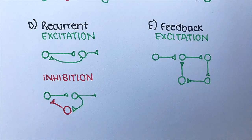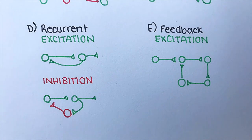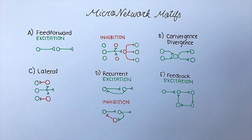Next you can see feedback and recurrent inhibition, where the excitation of one cell leads to the excitation of the one downstream, which in itself then inhibits the initial cell's functioning. This is quite useful to prevent a snowballing effect of excitation, as once a signal has been passed along, it's shut down from the starting point.